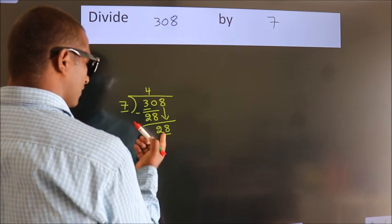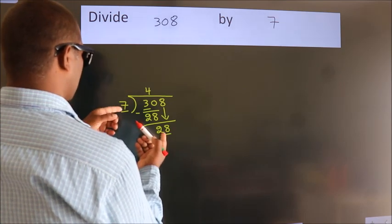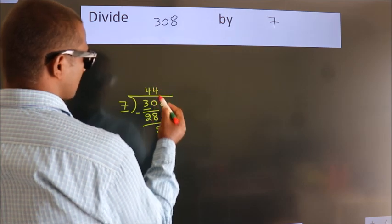So, 28. When do we get 28? In 7 table. 7 fours 28.